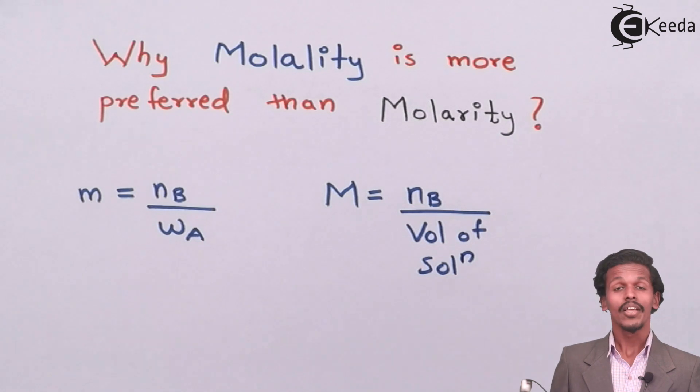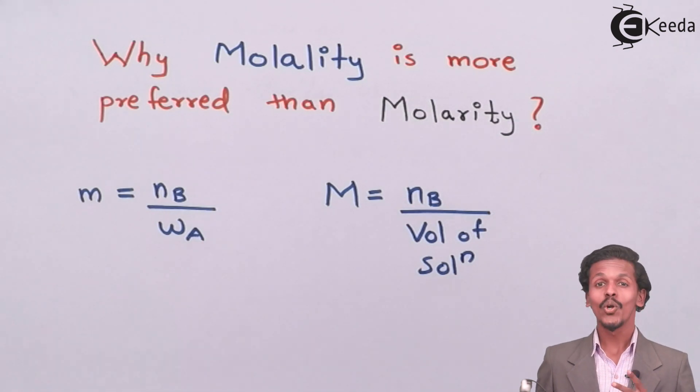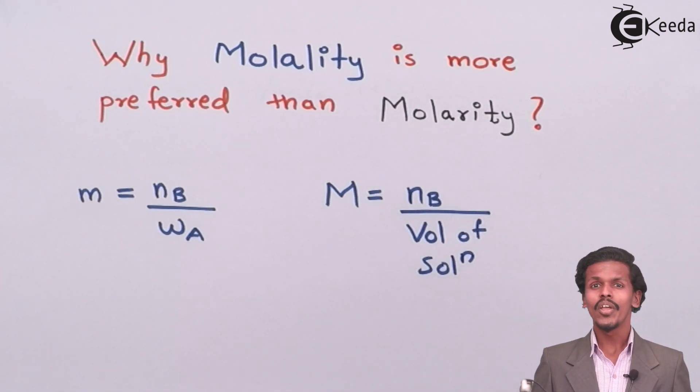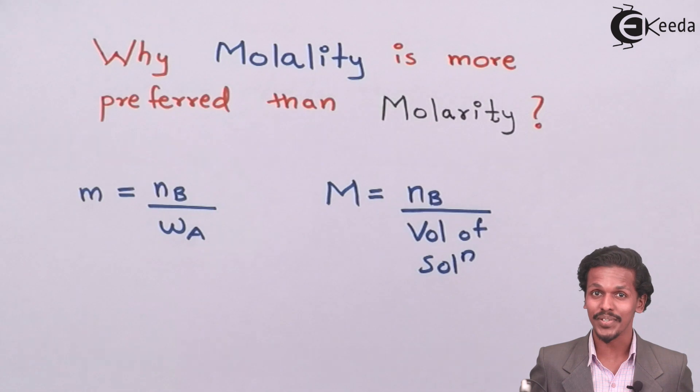So in this, as we can see, there are two main parameters. One is weight and the other is volume. And as we know, weight is independent of temperature and volume is dependent on temperature.